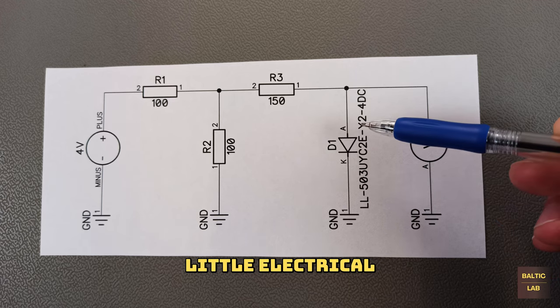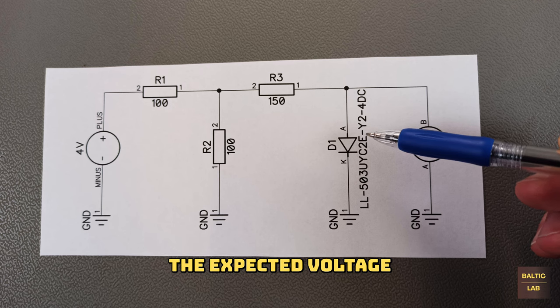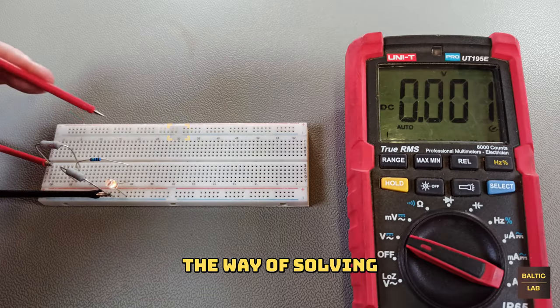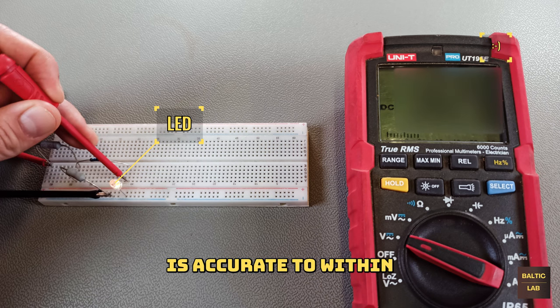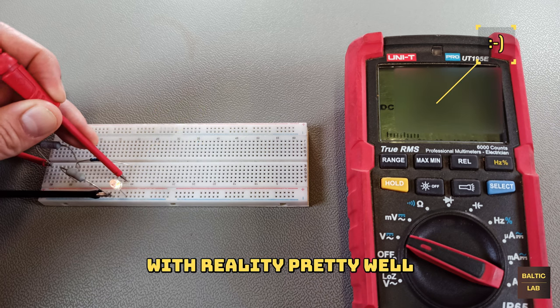This circuit is a tricky little electrical engineering brain teaser. The task is to find the expected voltage across the diode D1. The way of solving a problem like this that I'll show here is accurate to within less than one percent and aligns with reality pretty well.